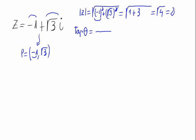Now let's find the argument. The tangent of the angle is equal to the imaginary part divided by the real part, that is the square root of 3 divided by minus 1, which gives us minus the square root of 3.